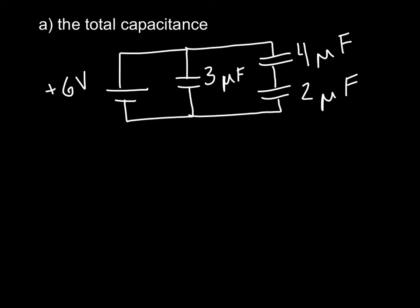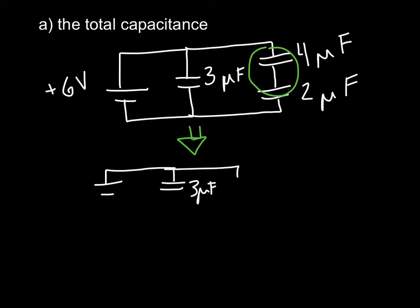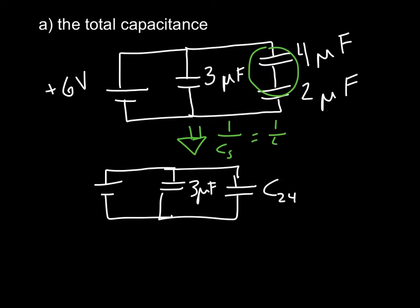To find the total capacitance, you have to look at how your circuit breaks down. These two capacitors are in series, so let's start there and circle them. Redrawing the circuit: here's your battery, you have your 3 μF, and let's call this C₂₄. Since they are in series, 1/C = 1/4 + 1/2, which equals 3/4. Remember you have to invert this, so C₂₄ = 4/3 × 10⁻⁶ farads, because it was in microfarads.